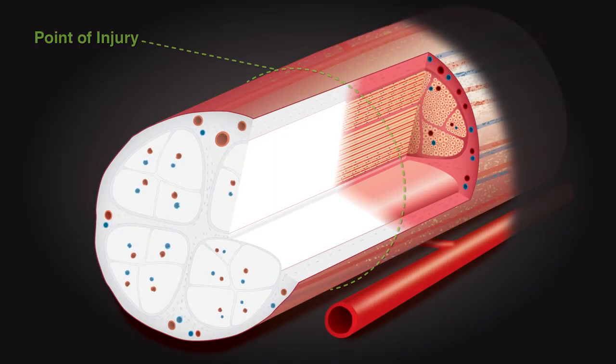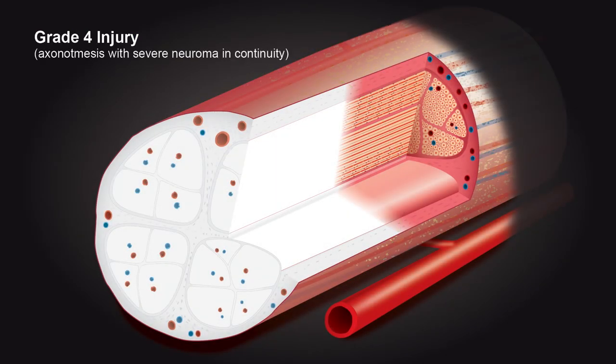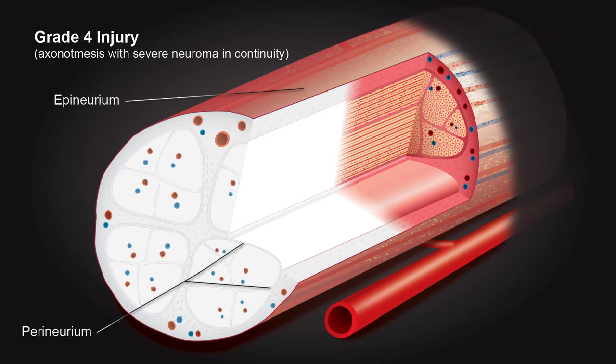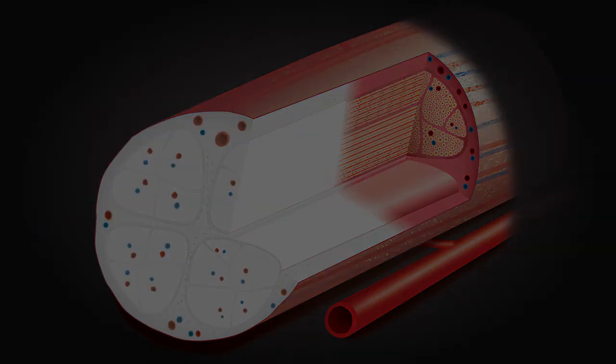In grade four injuries, along with axonal and endoneurial discontinuity, the perineurium is compromised, while the external epineurium is observed intact. There is complete disruption of the nerve's guiding scaffolds along the intraneural scar formation and severe axonal misdirection. This grade entails an even poorer prognosis, for which surgery is required.